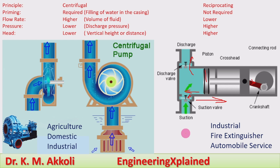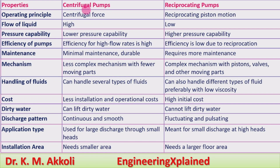Now we will take a list of other differences between the two pumps. Operating principle: centrifugal force versus reciprocating motion. Flow of liquid: high flow rate in centrifugal pumps, low flow rate in reciprocating pumps. Pressure capability: lower discharge pressure for centrifugal, higher discharge pressure for reciprocating. Efficiency: for high flow rates the centrifugal pump achieves higher output, so efficiency is higher for centrifugal and lower for reciprocating pumps.